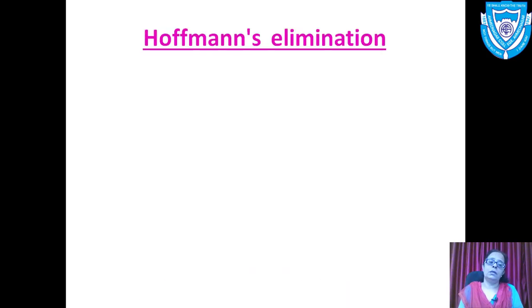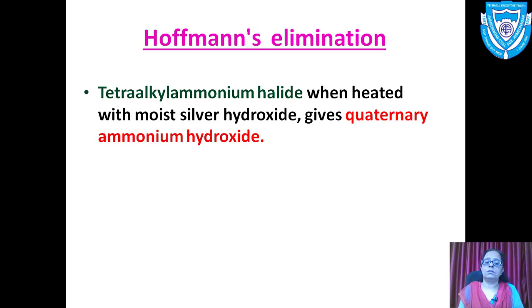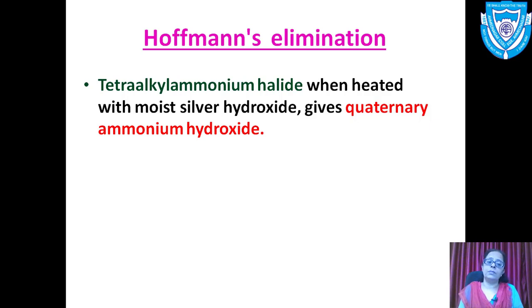The next chemical reaction we are going to study is Hoffmann's elimination reaction, named after the scientist who first detected it. In this reaction, a tetraalkyl ammonium halide obtained from the earlier reaction is heated with moist silver hydroxide or moist silver oxide, giving a quaternary ammonium hydroxide.